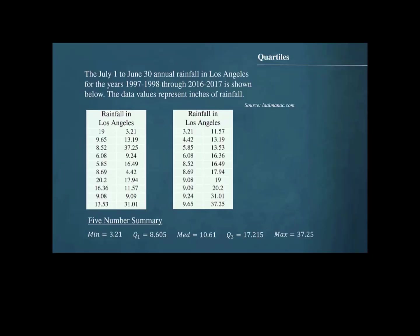In a previous lesson, we constructed the five-number summary for the July 1st to June 30th annual rainfall in Los Angeles for the years 1997–1998 through 2016–2017. The five-number summary can be used to construct a graph called a box plot.